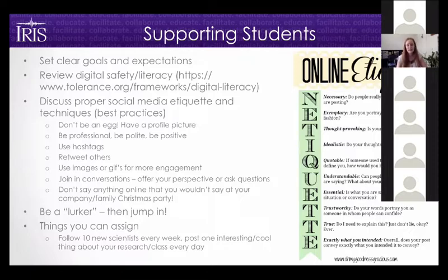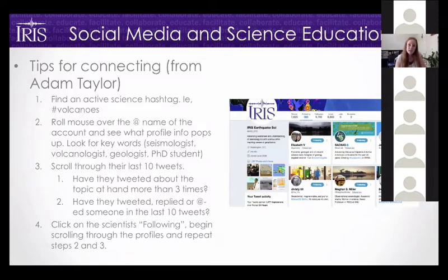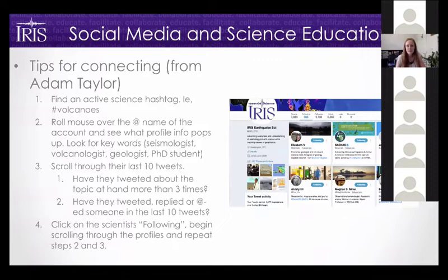Here are some ideas for what you can assign to students. They could follow ten new scientists each week on various topics, or post an interesting thing about their research every day. To help students find scientists: find an active science hashtag like volcanoes or earthquakes, roll over the person's name to bring up their bio, and look for keywords like seismologist, volcanologist, geologist, or PhD student. Then scroll through their recent tweets to see if they're active and talking about things relevant to your subject.